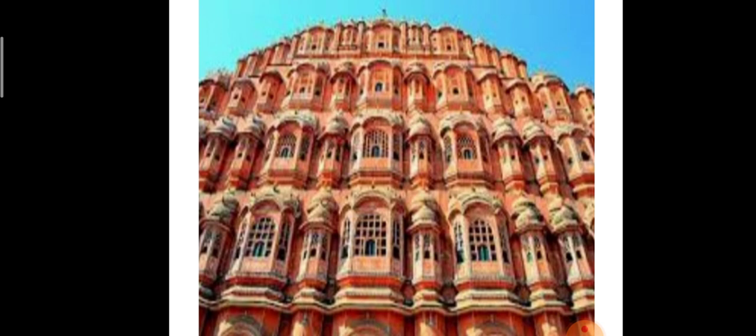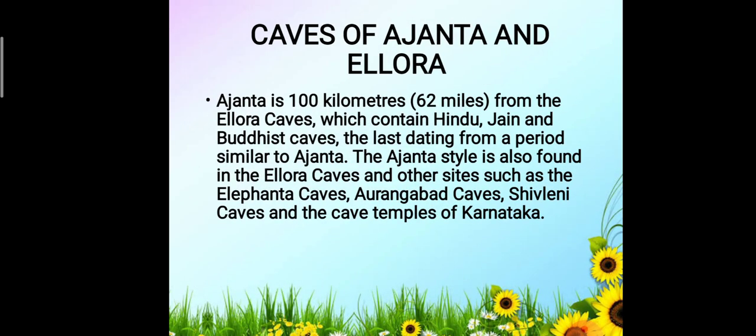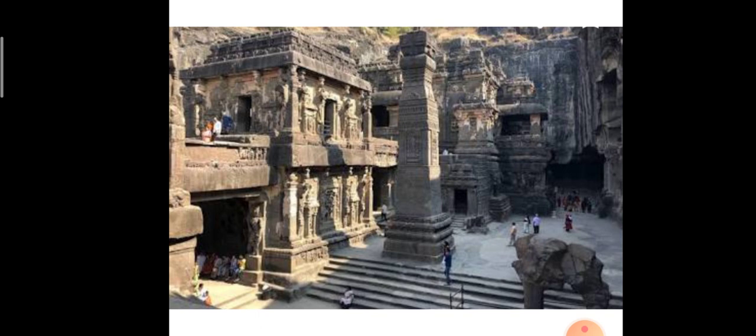Ajanta is 100 kilometers from the Ellora Caves, which contain Hindu, Jain and Buddhist caves. The Ajanta style is also found in the Ellora Caves and other sites such as the Elephanta Caves, Aurangabad Caves, Shivleni Caves and the cave temples of Karnataka. Ajanta and Ellora are very famous for Buddhist relics. The walls of these caves are covered with paintings depicting the life of Lord Buddha. These are near Aurangabad.